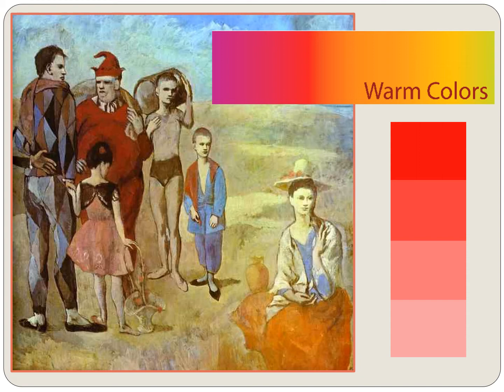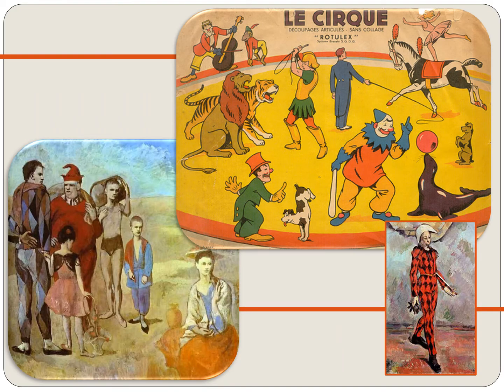We see many warm colors in this painting, such as orange, rose, pink, red, and brown. Picasso still used blue colors, but he made the painting happier looking by adding warm colors like rose. Picasso loved the circus. He became friends with some of the circus performers and traveled around with them as they went from town to town doing their circus shows. Most of the Rose Period paintings were of circus people.